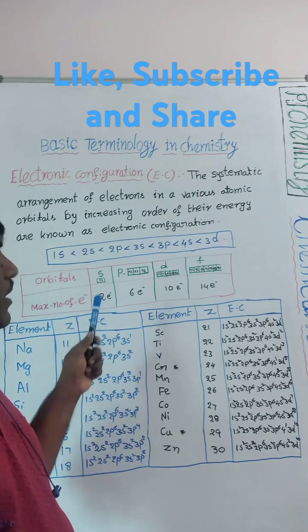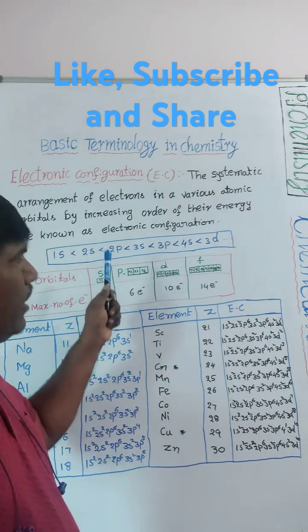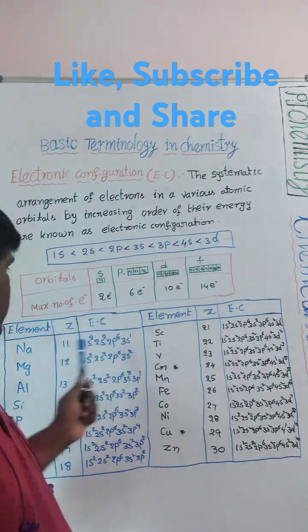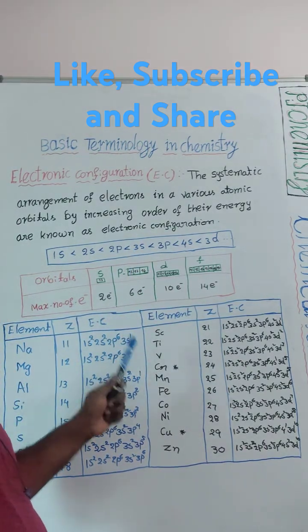10 electrons means neon. The remaining 1 electron we should fill in the 3s. So 3s1, that is 1s2, 2s2, 2p6, 3s1.